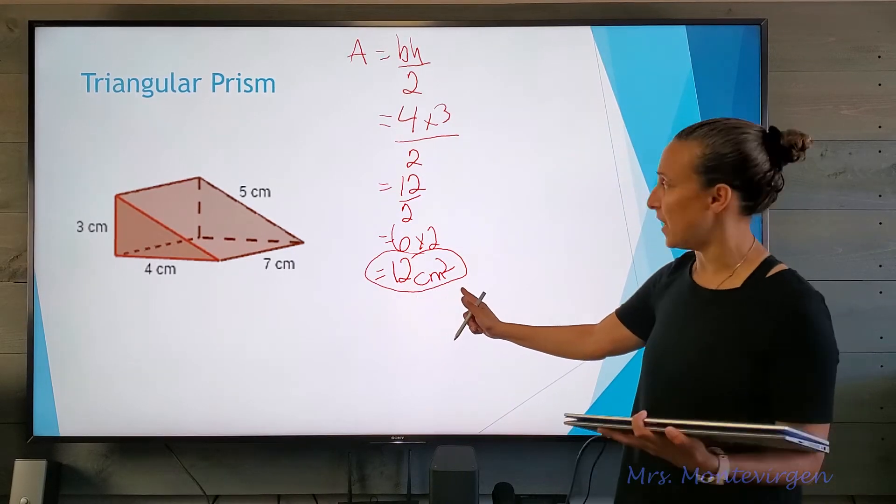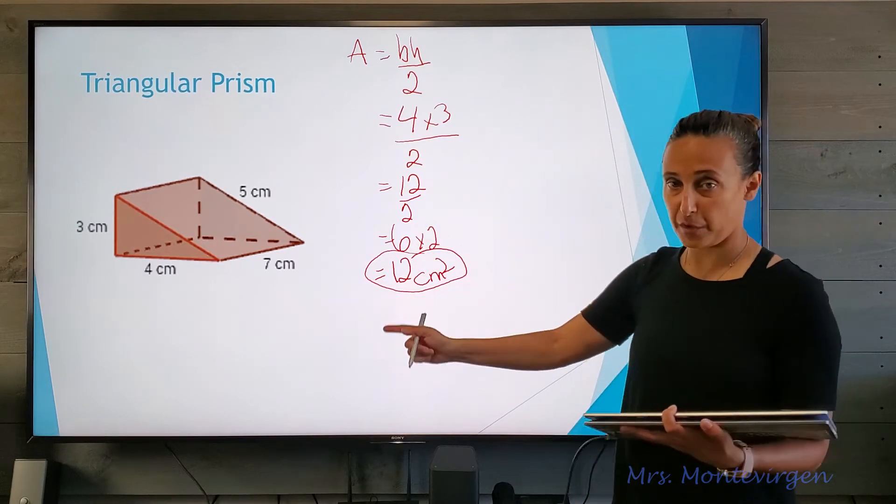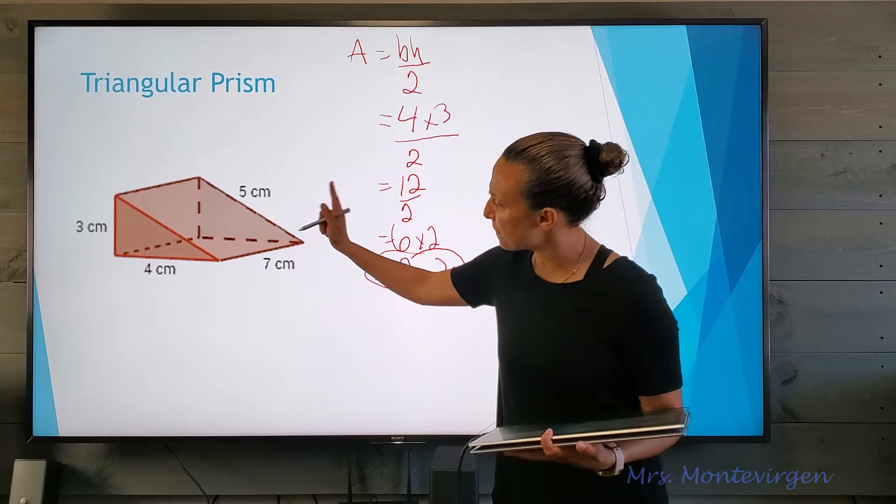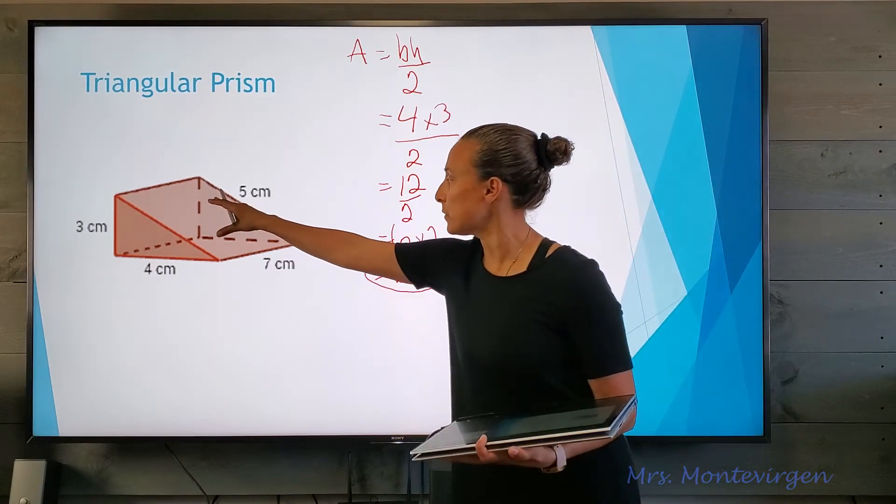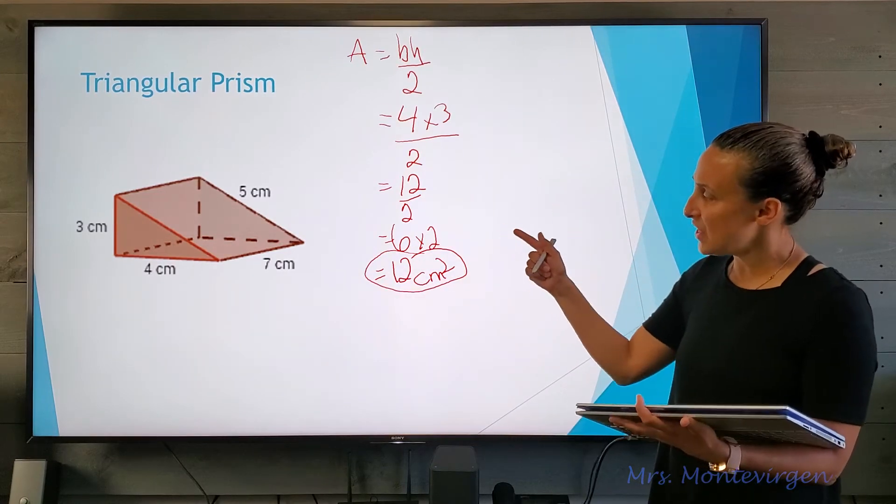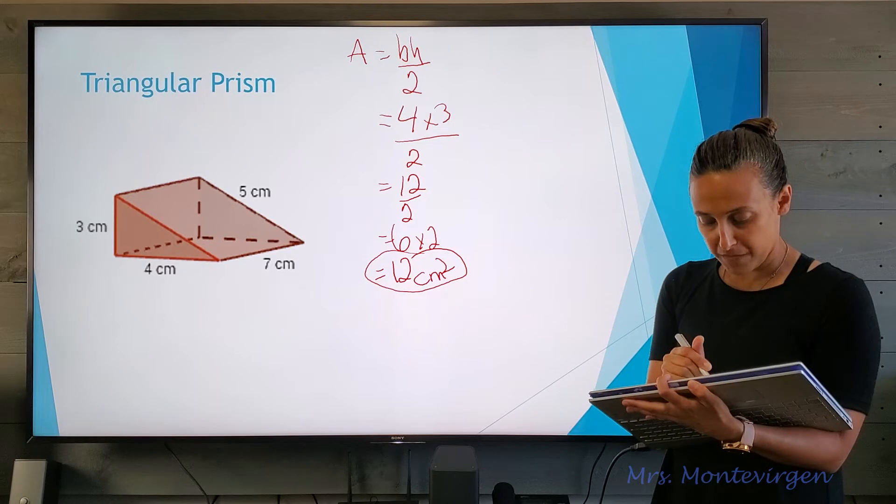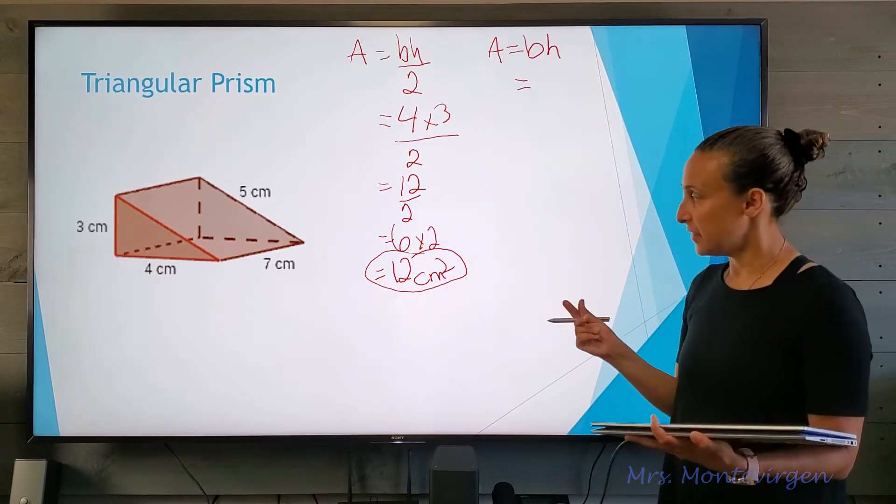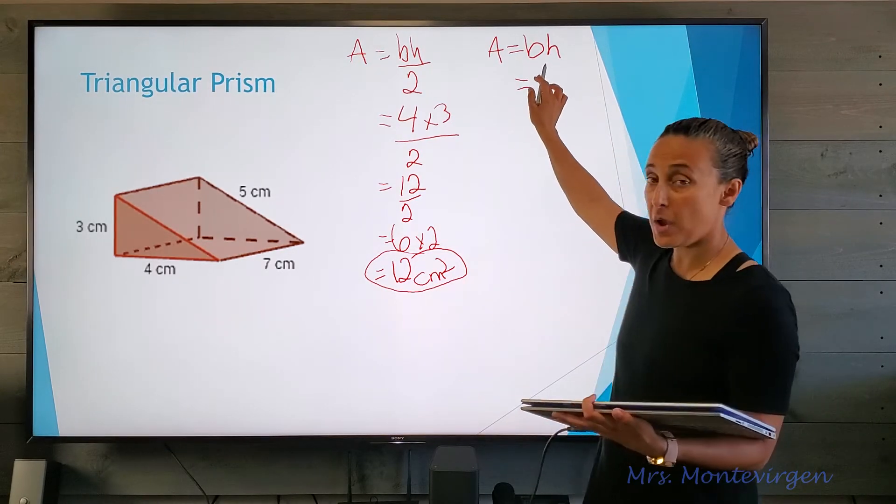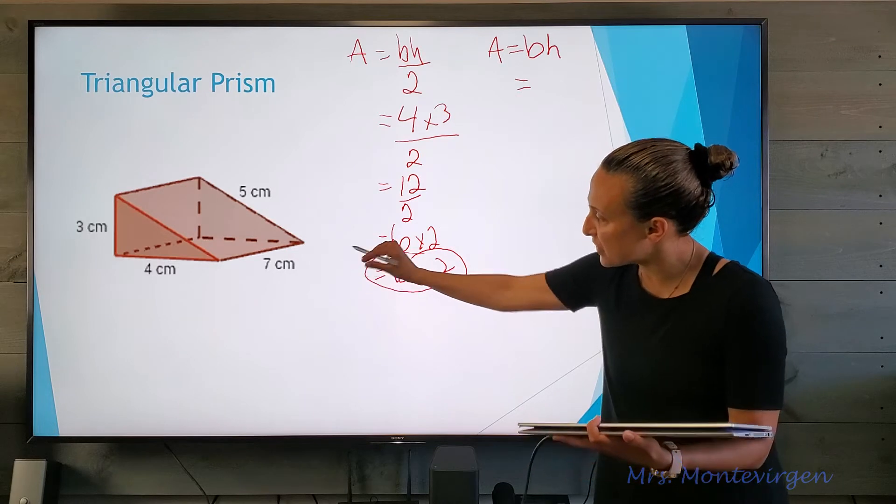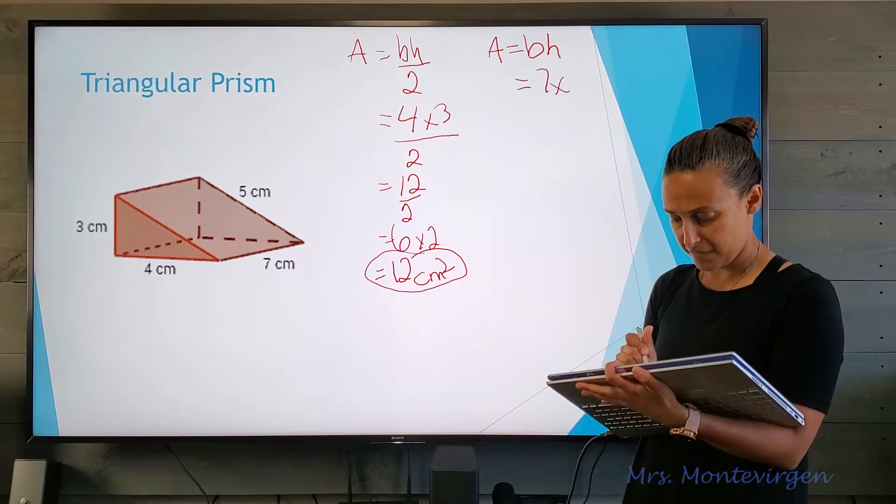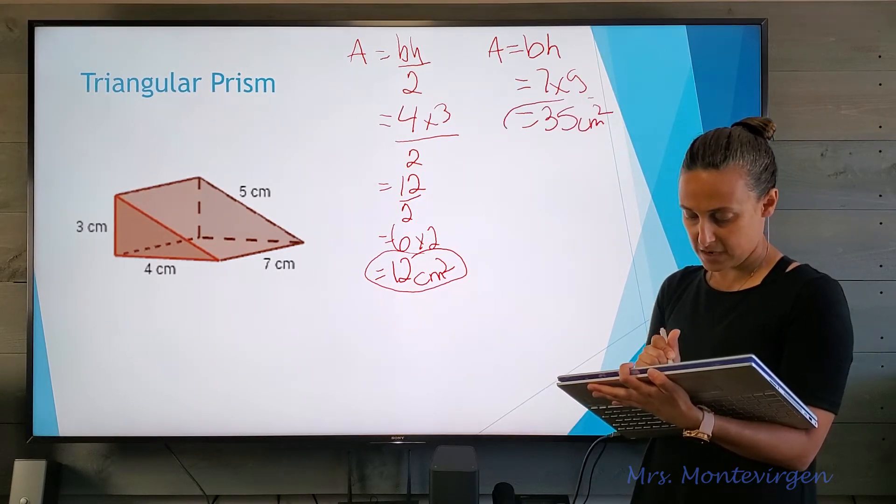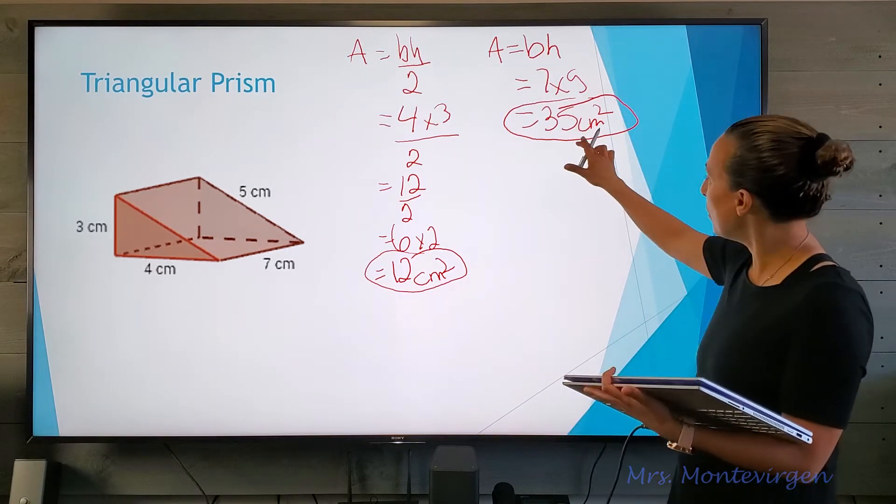Now I'm going to do the front part of this triangular prism, that large part that's sloping downwards. I can see that it's in the shape of a rectangle, so base times height. My dimensions are seven by five, so seven by five. My answer is thirty-five square centimeters.